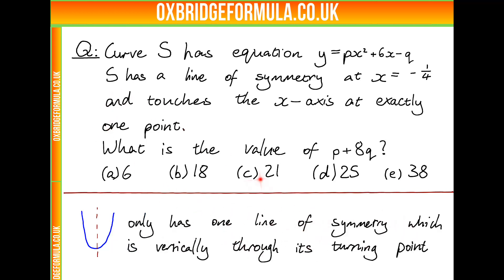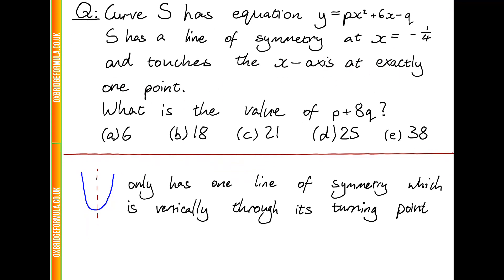What else are we told about S? Well, we are told it touches the x-axis at exactly one point. So what does that tell us? Well, a parabola that only touches the x-axis at exactly one point must have exactly one root, and that tells us that the root must therefore be a repeated root. And when we have a repeated root, that means that we have a turning point at the x-axis on the root.